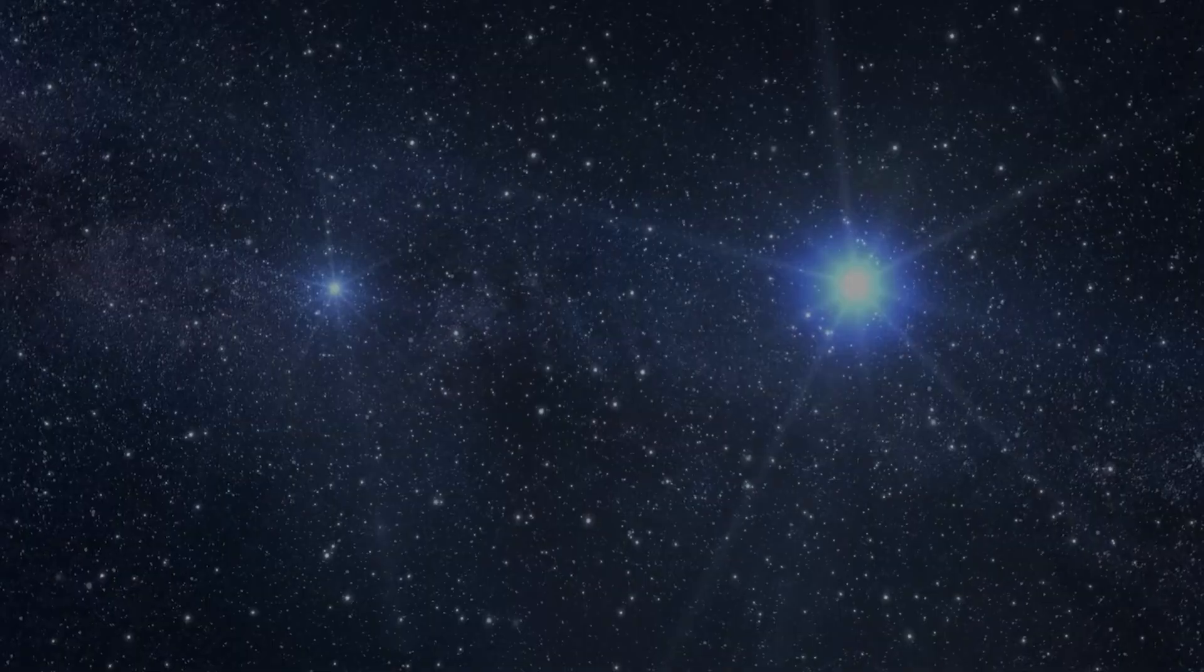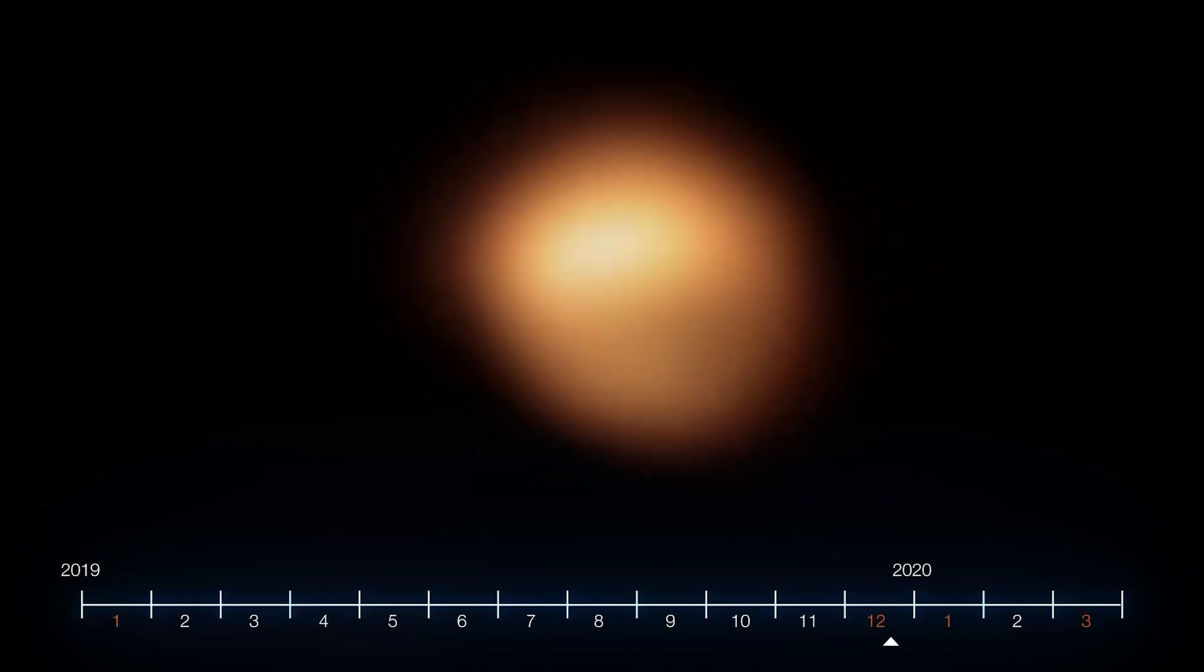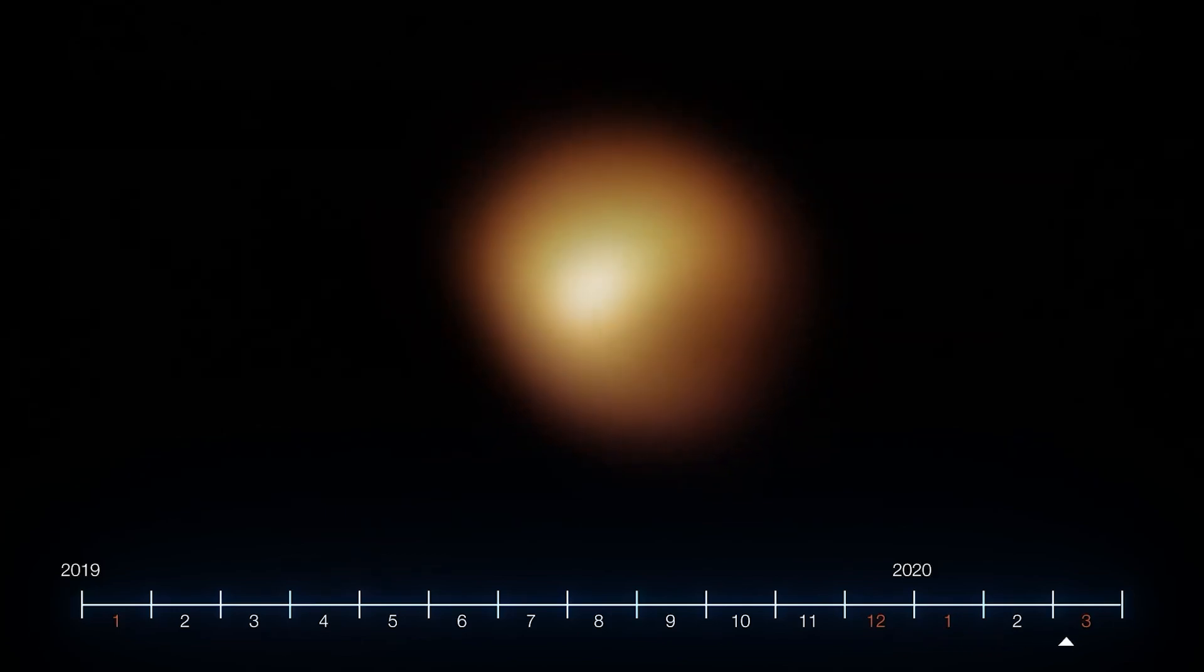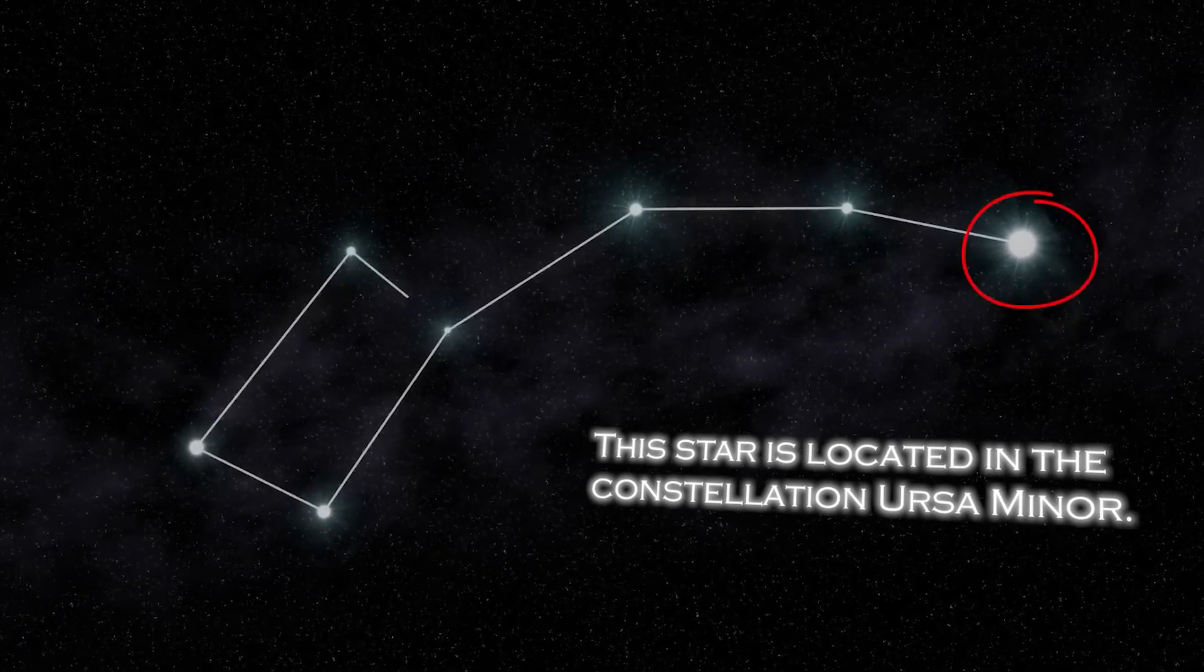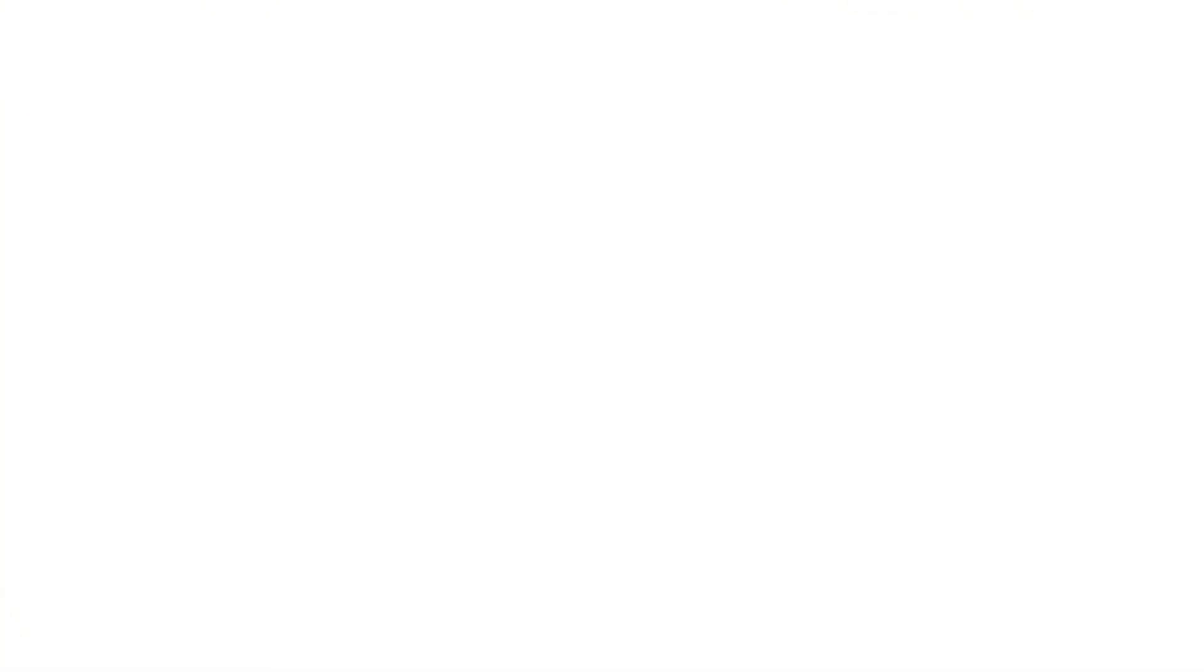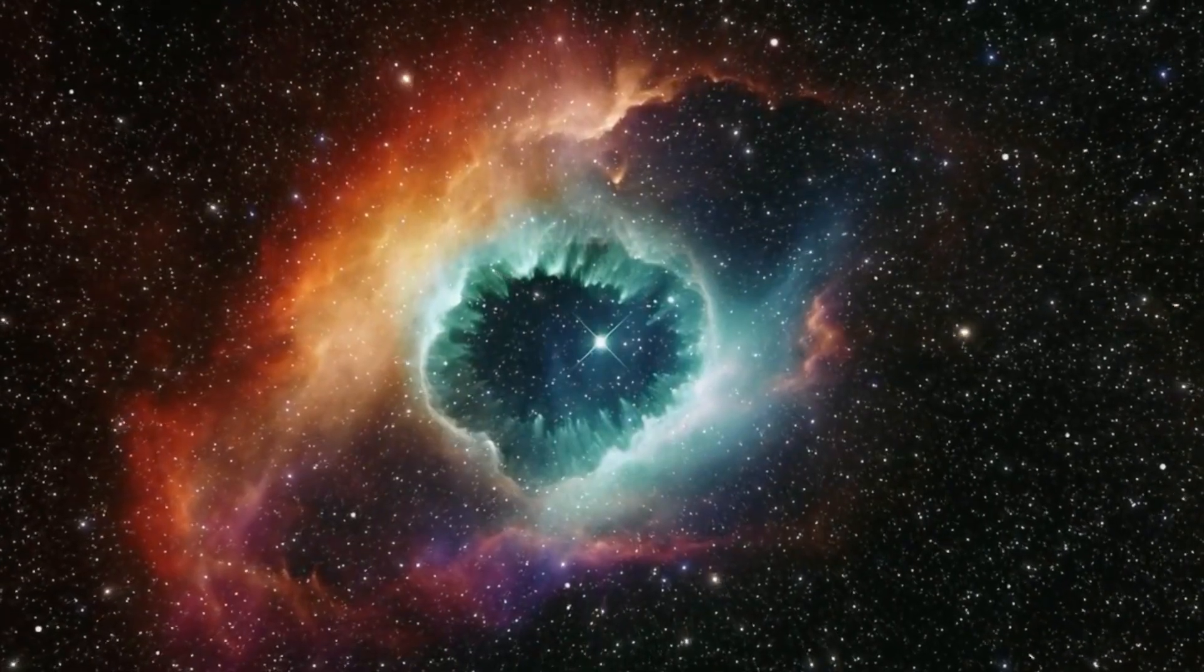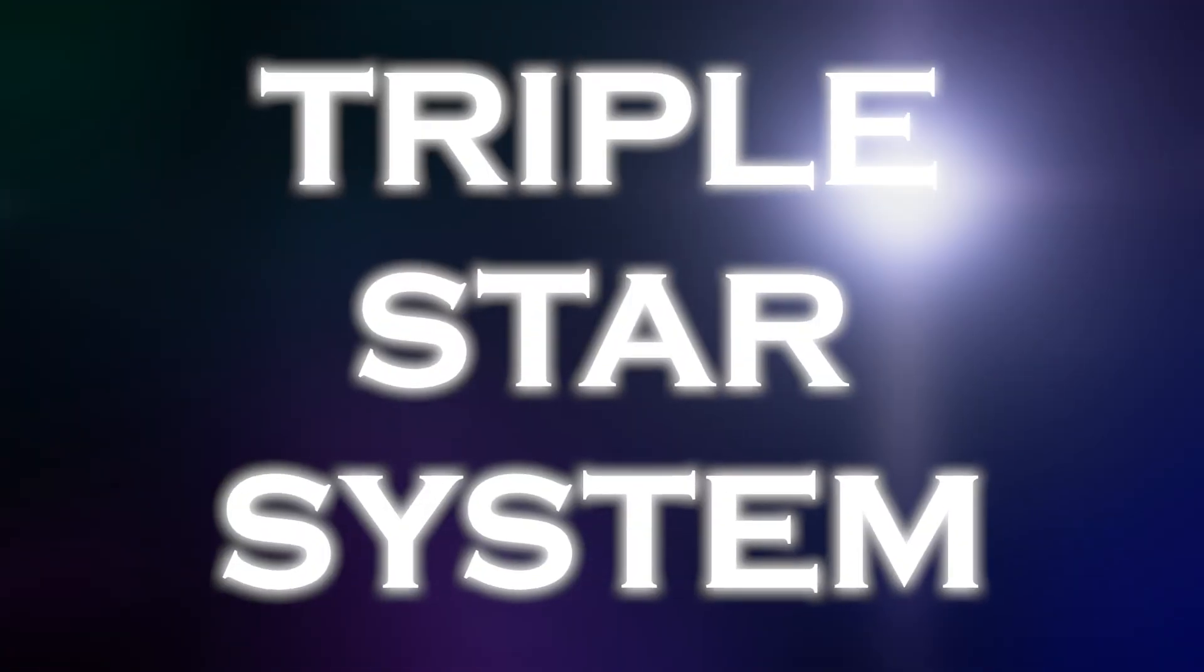Polaris, also known as the North Star, occupies a special position in the sky because of its proximity to the celestial North Pole. It is almost directly over the Earth's North Pole, which gives the illusion that it remains static in the northern sky. The star is located in the constellation Ursa Minor. Polaris is a star of moderate brightness that stands out as a yellow-white supergiant of considerable dimension compared to our Sun. Despite its appearance as a lone star, it is actually part of a rather complex triple star system.